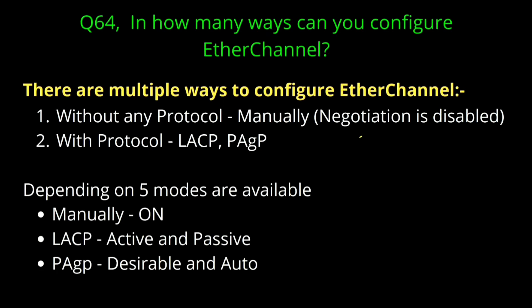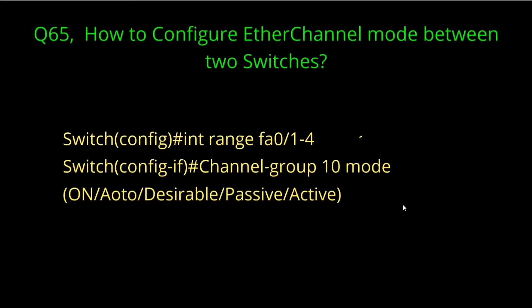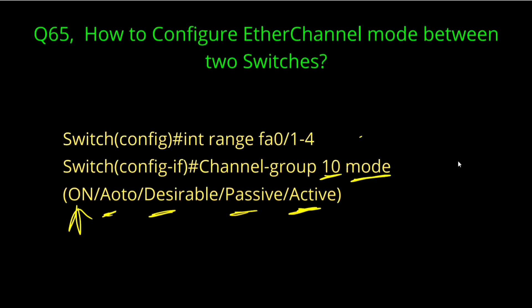Last question of the day — question number 65: how to configure EtherChannel between two switches. The command is: go to interface range FastEthernet 0 to 4, then use the channel-group command followed by the group number and mode. If the mode is 'on', you are configuring static EtherChannel. If the mode is 'auto', 'desirable', 'passive', or 'active', you are configuring EtherChannel using a protocol.